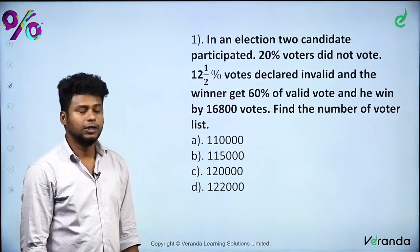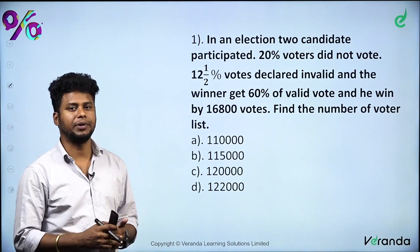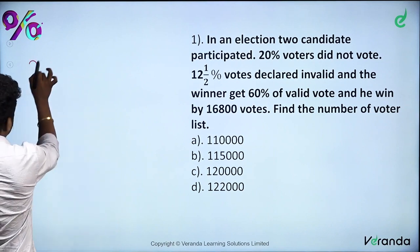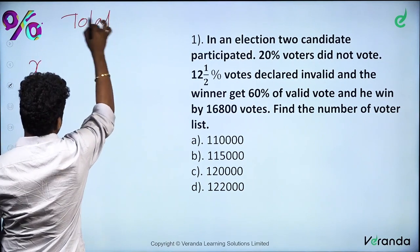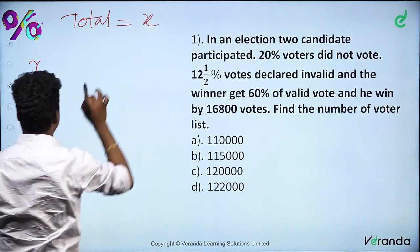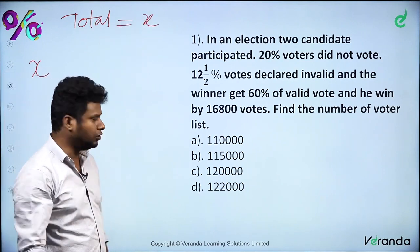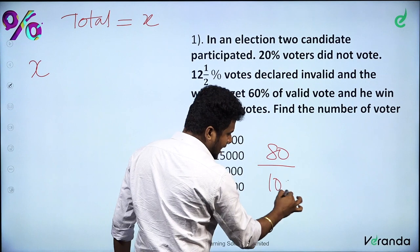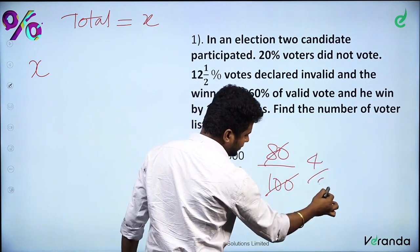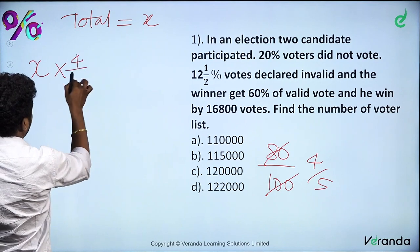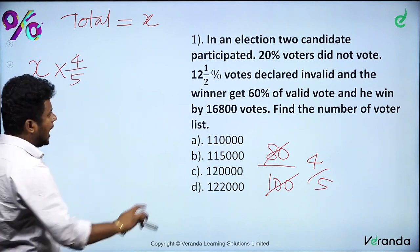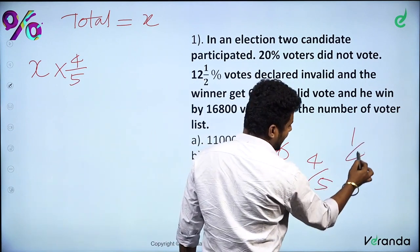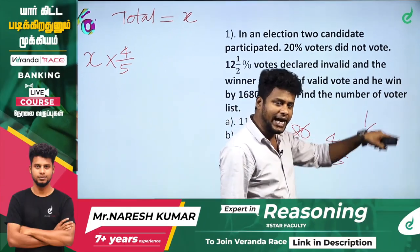Now, how do you solve this in the conventional method? In the election, there is a 20% non-vote. Let the total voters be x. Voters who voted = x × 80/100 = x × 4/5. Of those, 12.5% — that is 1 by 8 — are invalid, so valid votes = x × 4/5 × 7/8.